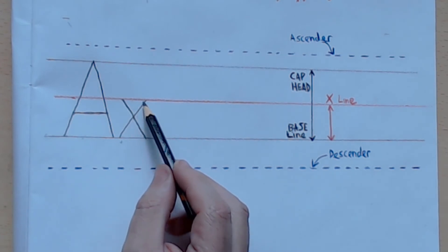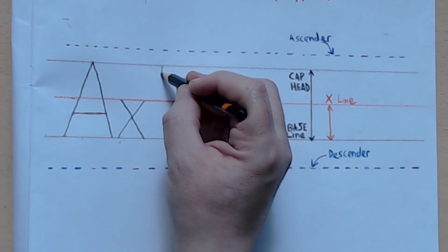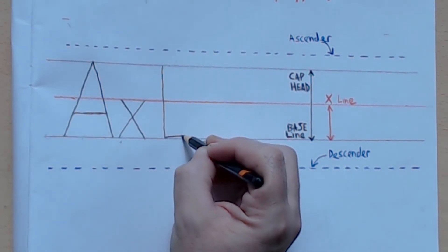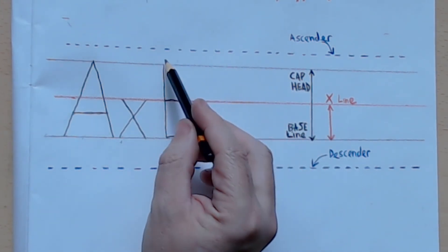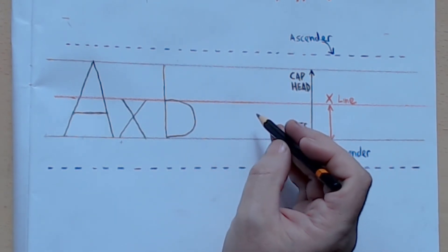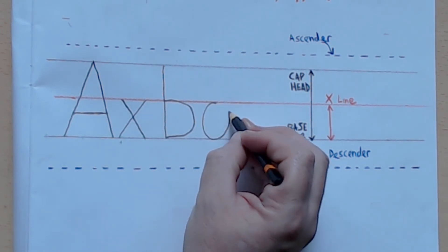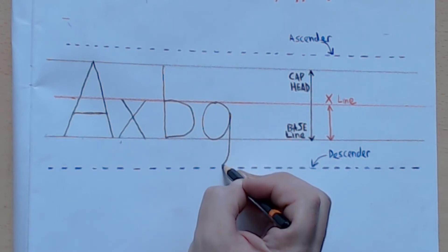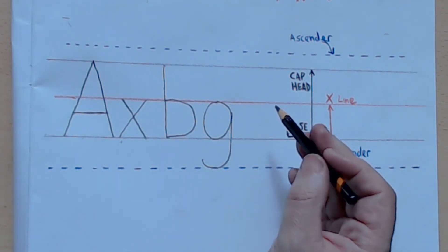Now obviously, lowercase lettering goes above the x-line as well, an example being a b, and that extends up there. And other letters can also extend, for example a g. G goes to what's called—because it goes under the baseline—it's called a descender.